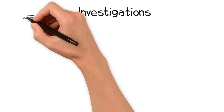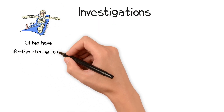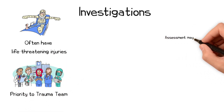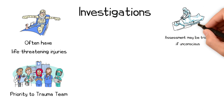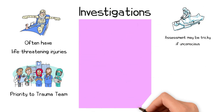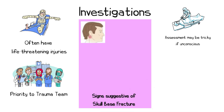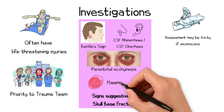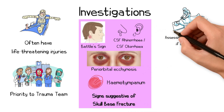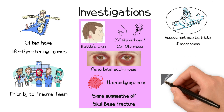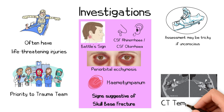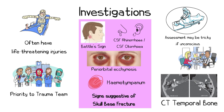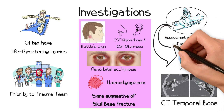Patients with a temporal bone fracture often have other life-threatening injuries and so should be managed by a trauma team, with priority given to these other life-threatening injuries. Assessment of such a patient can be challenging, especially if they have reduced consciousness. Clinical signs that may raise suspicion of a skull base fracture include Battle's sign, periorbital ecchymosis, CSF otorrhea or rhinorrhea, and haemotympanum, all of which can be detected even in a comatose patient. Ultimately, the diagnosis is established by a CT scan of the temporal bone. The impact of such a fracture may only be elicited later when the patient is responsive enough to assess their hearing and facial nerve function.